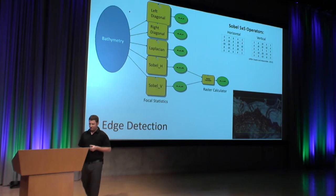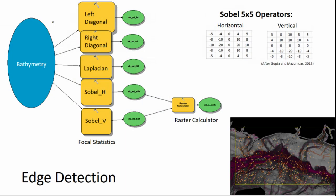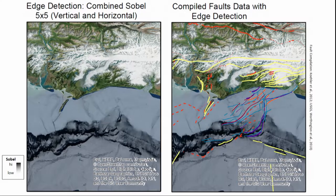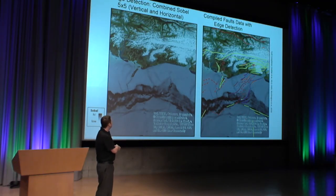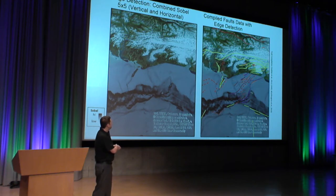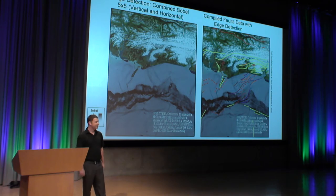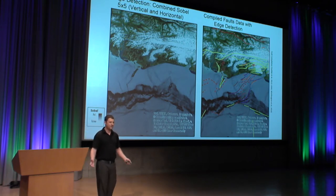I ran edge detection using Model Builder, doing several different iterations. Essentially, you build an operator and then apply focal statistics. The best result used Sobel Horizontal and Sobel Vertical. These neighborhood operators go in and operate on a pixel-by-pixel basis to decide whether we see an edge. In the result, black should be essentially identified as an edge, while white is not an edge. We're seeing some structures that line up pretty well with faults, particularly down on the lower slope. There are additional structures where this edge detection algorithm could help us build a better fault map.